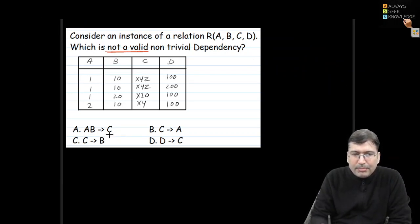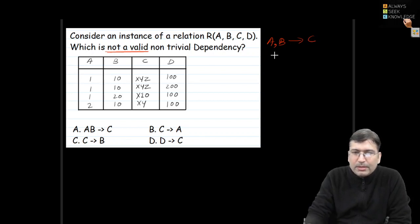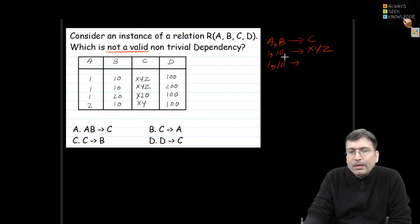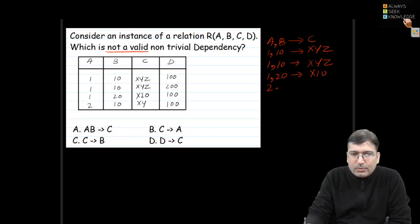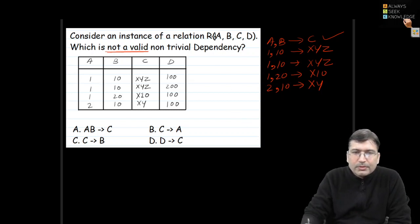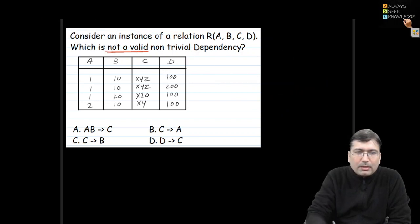To validate AB implies C, find the combination of A and B. AB has value 110 in the first row, mapped with XYZ. The next row also has 110 — if the same value repeats, the mapping must be the same. If we get a different mapping, the dependency doesn't hold. Checking all rows, the mapping stays XYZ, so this functional dependency holds good — it is not invalid.